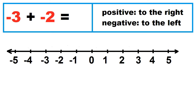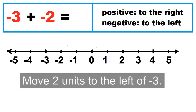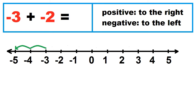Another example: negative 3 plus negative 2. Move 2 units to the left of negative 3 — 1, 2. Negative 3 plus negative 2 equals negative 5.